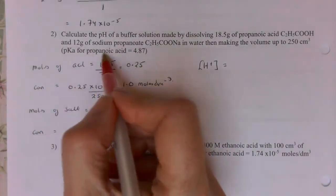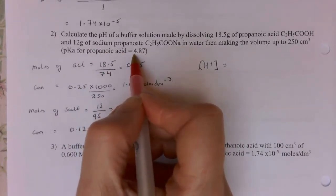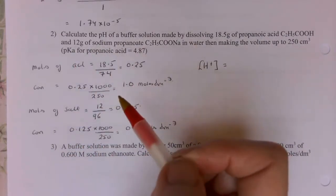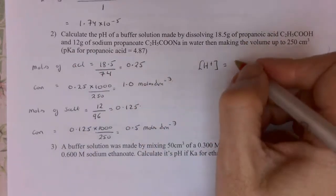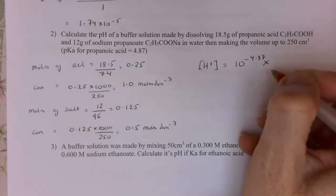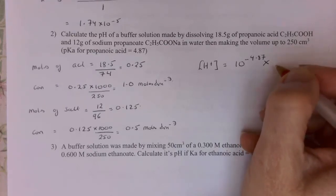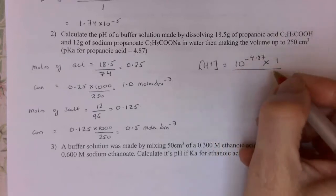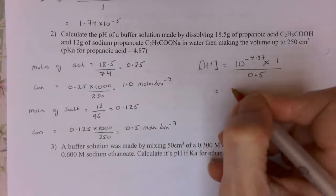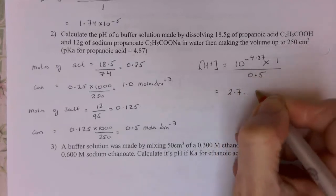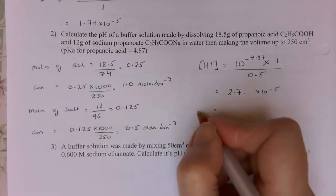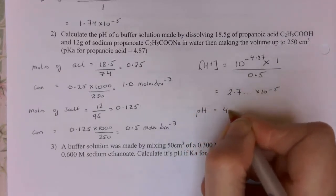You'll notice that this example gives us the pKa value rather than the Ka value, so first I have to convert pKa into Ka: Ka = 10⁻⁴·⁸⁷. Then multiply by the concentration of the acid (1.0) divided by the concentration of the salt (0.5). Plugging that into the calculator gives approximately 2.7 × 10⁻⁵. Taking −log₁₀ gives a pH of 4.57.